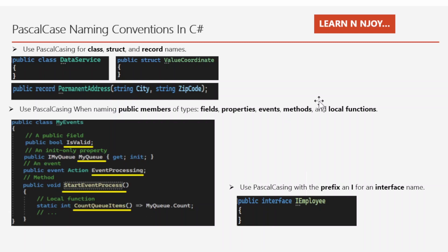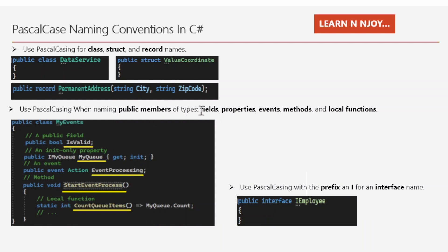Use case number two: use Pascal casing when naming public members of a type — fields, properties, events, methods, and local functions. For example, inside a class MyEvents: a public field 'IsValid' is in Pascal case; an init-only property 'MyQueue' is in Pascal case; an event 'EventProcessing' is in Pascal case; a method 'StartEventProcess' is in Pascal case; and a local function 'CountQueueItems' is also in Pascal case.